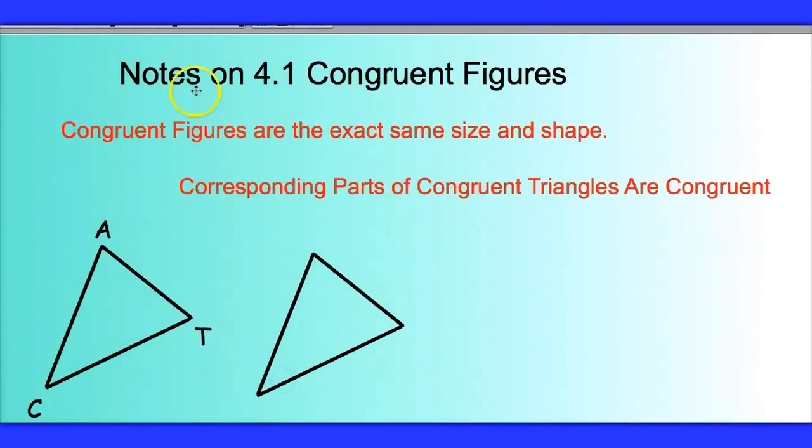So let me actually just label these triangles here. Let's call this triangle big B, I, G. And if I do that, I can actually now talk about which parts match up, which corresponding parts match up.